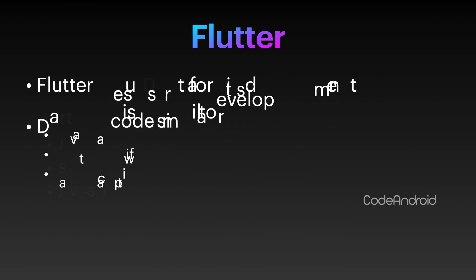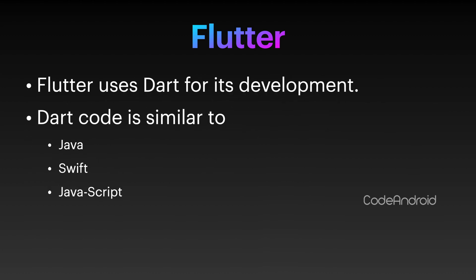Flutter uses a language called Dart for its development. But why use a new language called Dart? Because Flutter helps to develop apps for multiple platforms, so they need to choose a language which runs effectively on all platforms. Dart code can be converted to ARM or x64 code for mobile and optimized JavaScript for web. Dart is an easy language to learn if you know Java, Swift, or JavaScript.